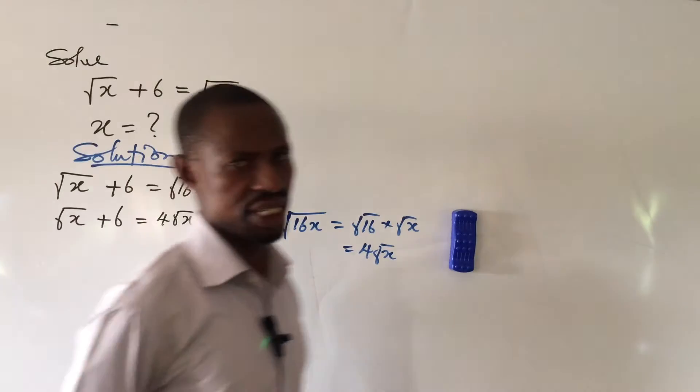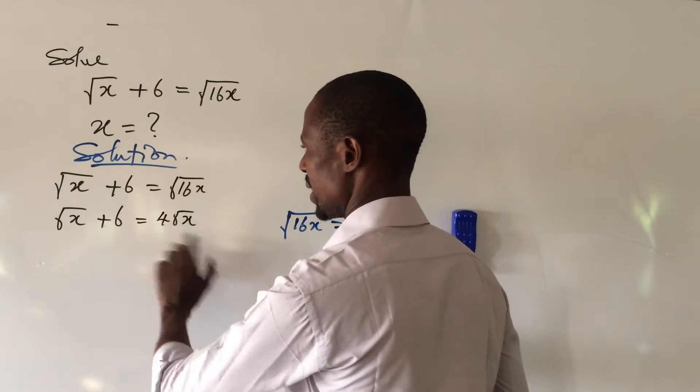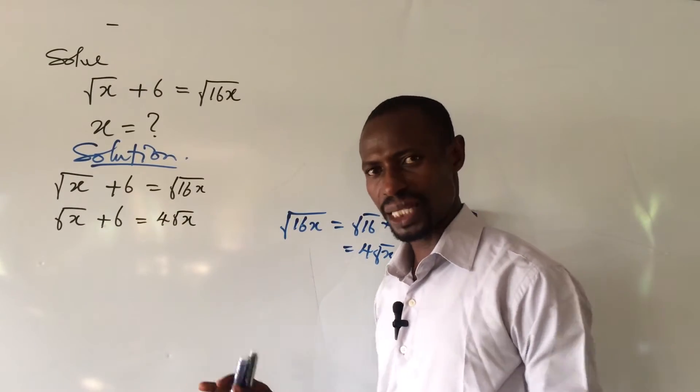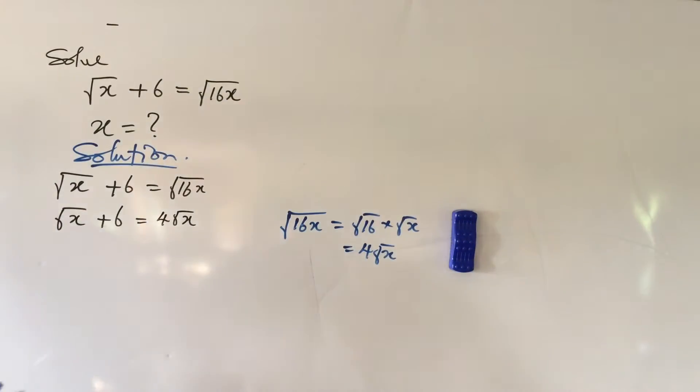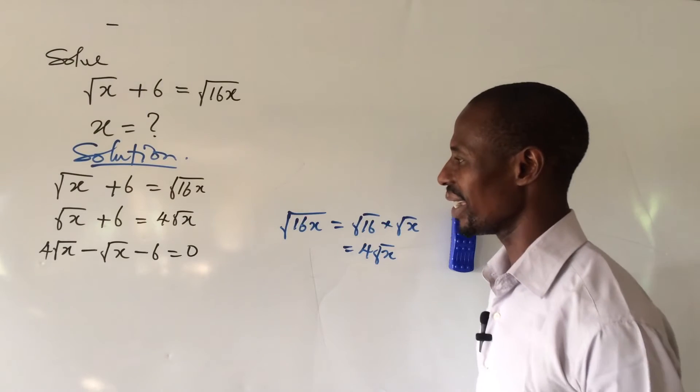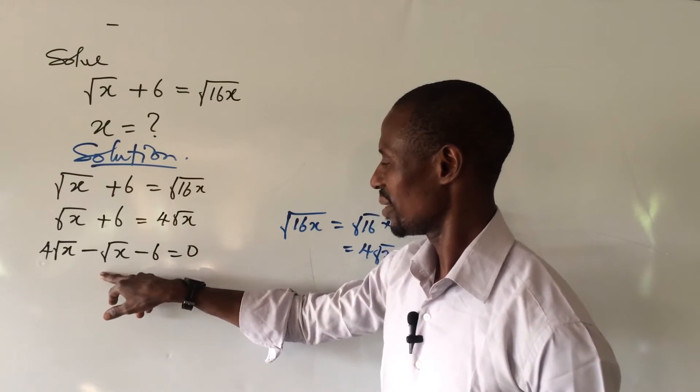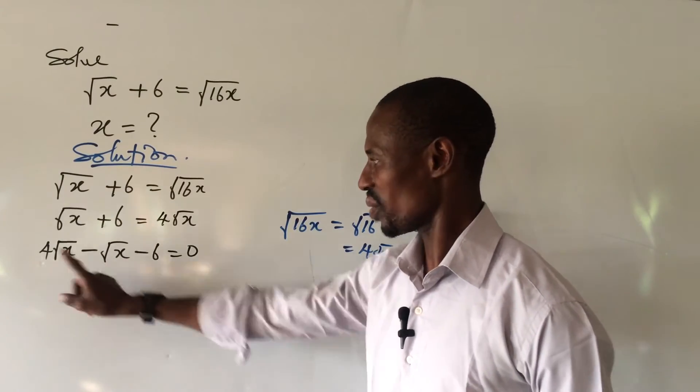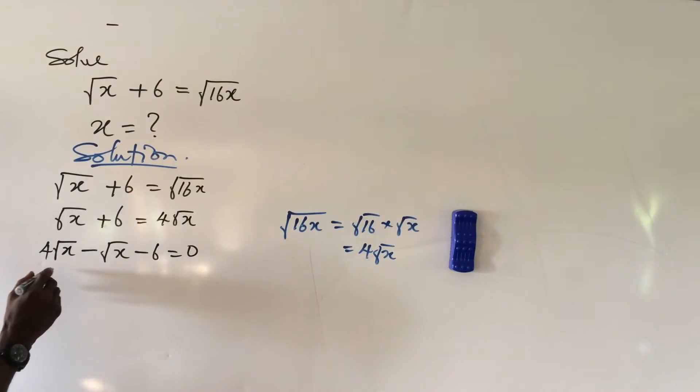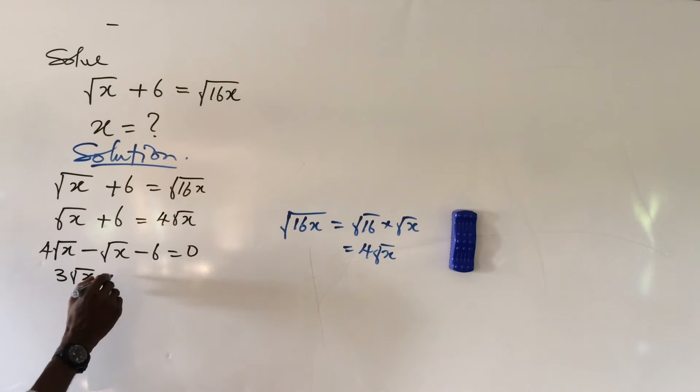Now we look again. Let's collect our like terms, the terms that are carrying the radicals. Let's take that to the left hand side. So if we rearrange, we'll have here 4 root x minus root x minus 6 equals zero. With what we have here now we can subtract this, because we have an invisible one here. So we will subtract this and we end up giving us 3 root x equals positive 6.